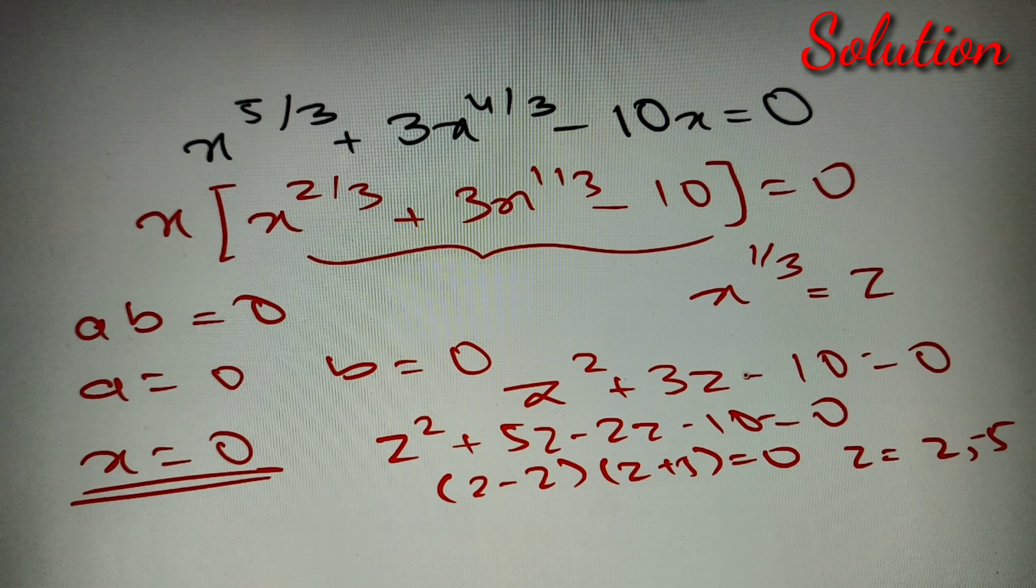Now if z = +2, it implies that x^(1/3) = 2, or the value of x = 8. So the second value of x is equal to 8.